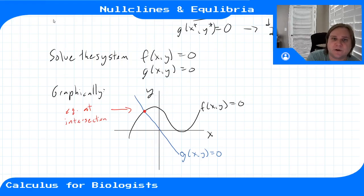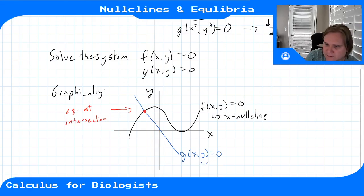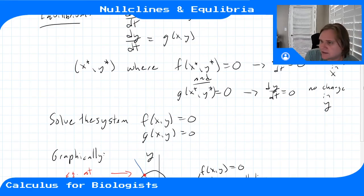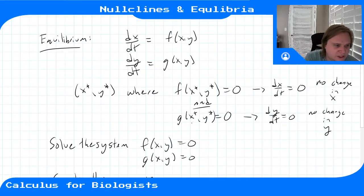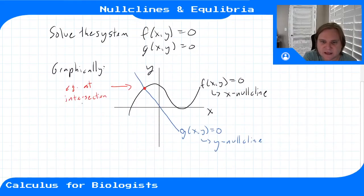Each of these curves is called a nullcline — a fancy word for a curve on which that function equals zero. The x-nullcline is the set of points in the xy-plane where f(x,y) = 0, meaning dx/dt = 0. The y-nullcline is where g(x,y) = 0, meaning dy/dt = 0. Where these two nullclines intersect is your equilibrium point.